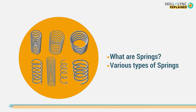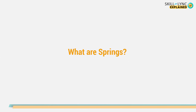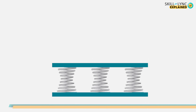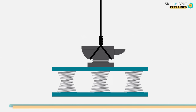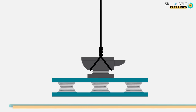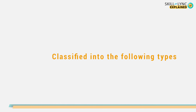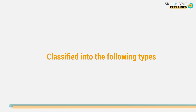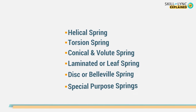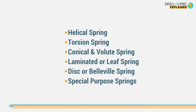In this video we will explain what springs are and their various types. Springs are mechanical devices that deflect or compress when a load is applied on them and restore to their original shape when that load is removed. They are used for pulling, pushing, winding, supporting, and sometimes lifting. Springs are classified into the following major types: helical spring, torsion spring, conical and volute spring, laminated or leaf spring, disc or bell spring, and special purpose springs.